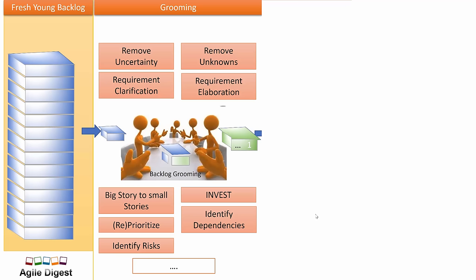If a story is very big, they break it into smaller stories and then re-groom and re-estimate those smaller stories. We also talk about INVEST — the acronym for Independent, Negotiable, Valuable, Estimable, Small, and Testable. We look into INVEST and also do prioritization based upon dependencies, risk, or cross-functional involvement. Keeping everything in mind, we re-prioritize and mark the stories as groomed or move them to low-priority.